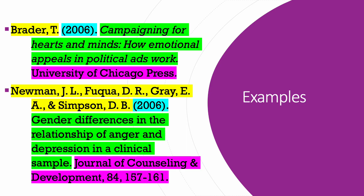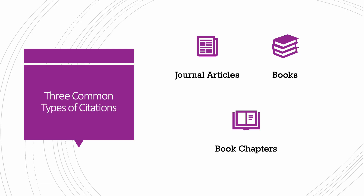Using the same examples as before, author is shown in yellow, date is shown in aqua, title is shown in green, and source is shown in pink. There are other elements in some sources, but understanding these four will help you understand the others. These are the most common types of sources for academic papers, so I will focus on them. They are journal articles, books, and book chapters.